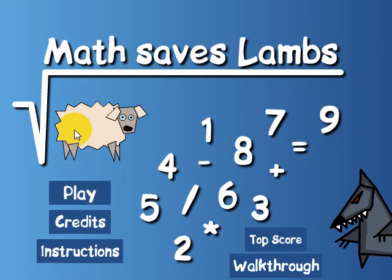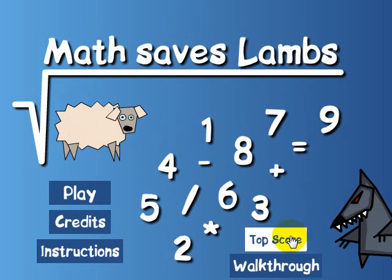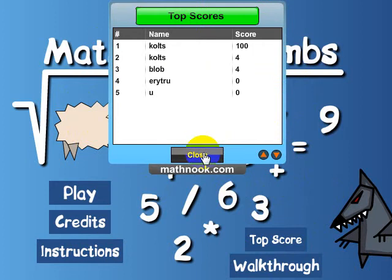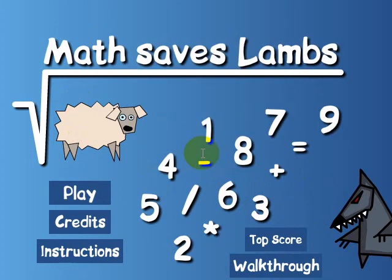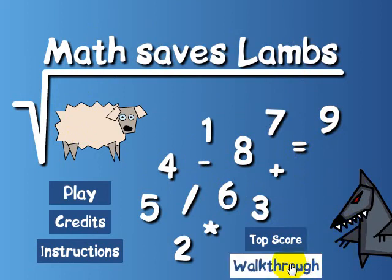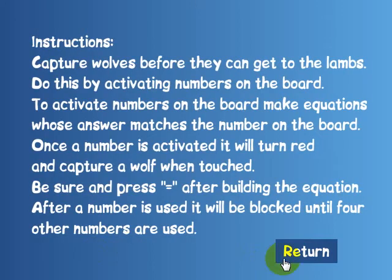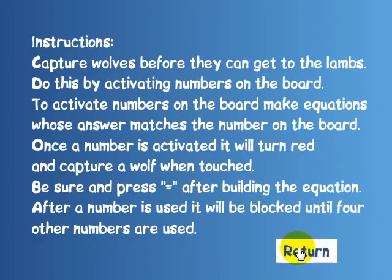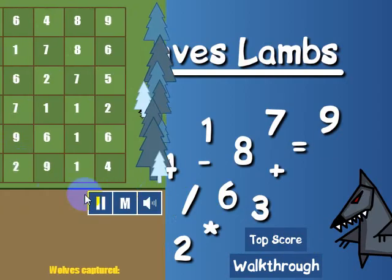This is going to give you a quick overview of Math Save the Lambs, how to play. When you first start up, this is the screen you'll see. If you want to see what the high scores currently are, click the top scores. You will see the high scores, and they're cleared out every month. Actually, I clicked it twice, so it showed up twice. And the walkthrough — if you click the walkthrough button, it'll take you to this video. Instructions will give you an overview of the instructions. Let's go ahead and click play to get to the game.